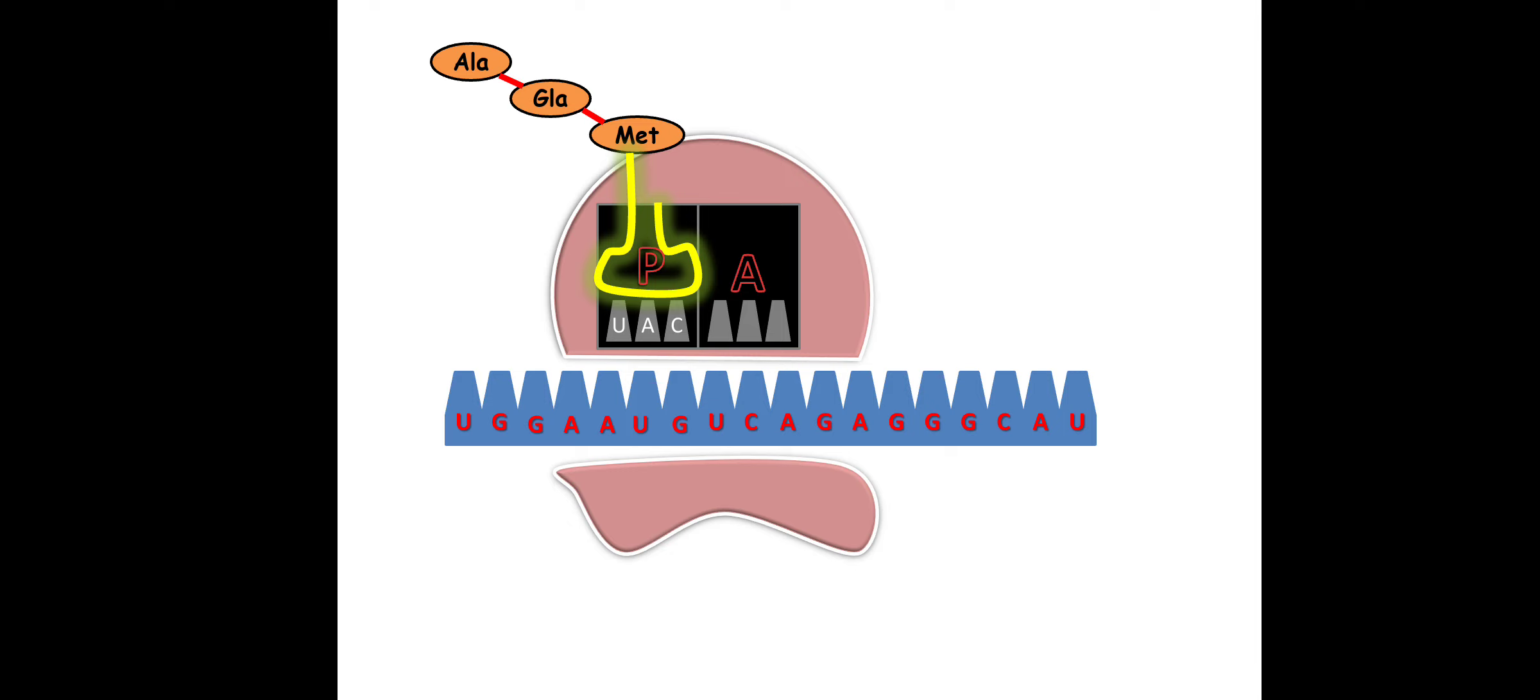This new amino acid is brought by tRNA, transfer RNA. Transfer RNA contains an anticodon complementary to the codon on mRNA. Only one particular tRNA will come and it will carry one particular amino acid. So transfer RNA brings a new amino acid and it will get attached to the A site.